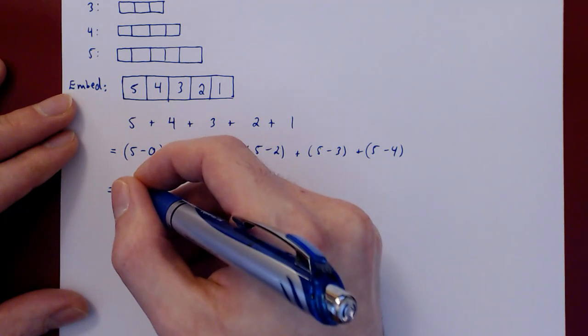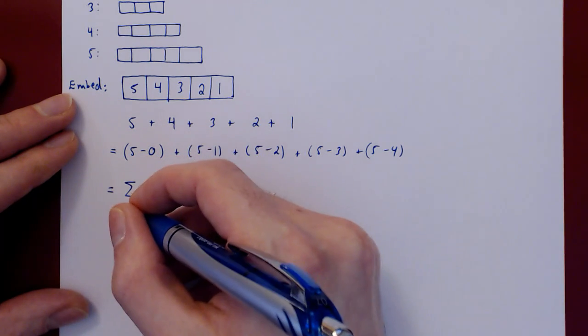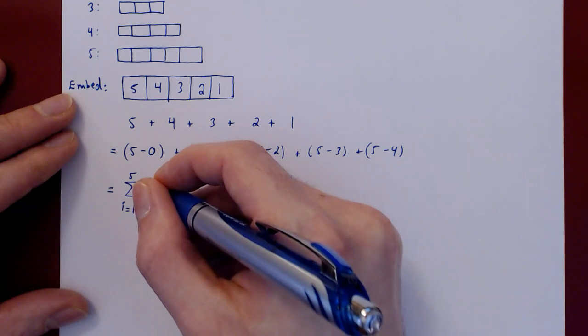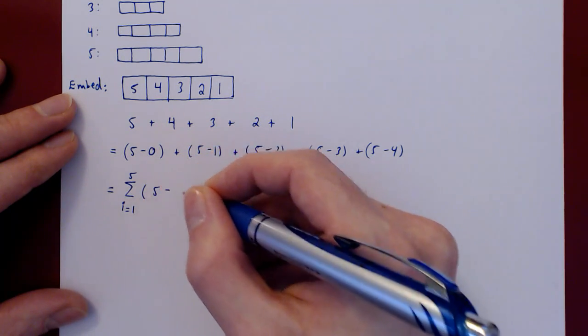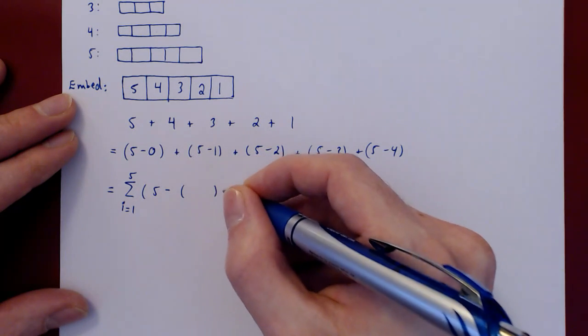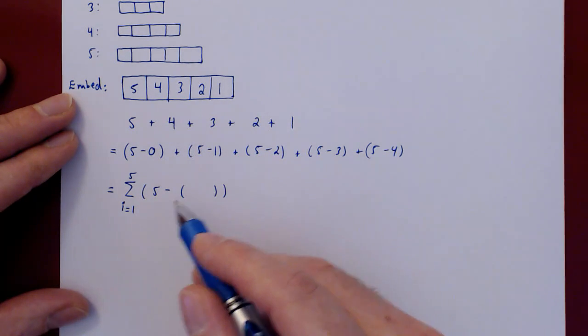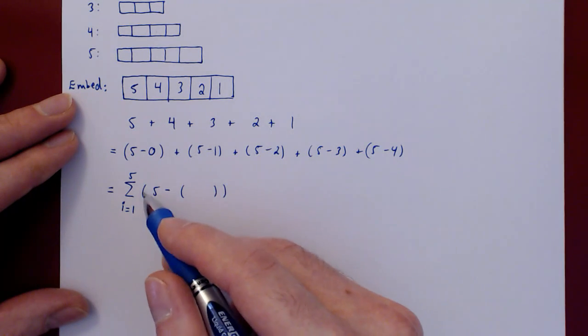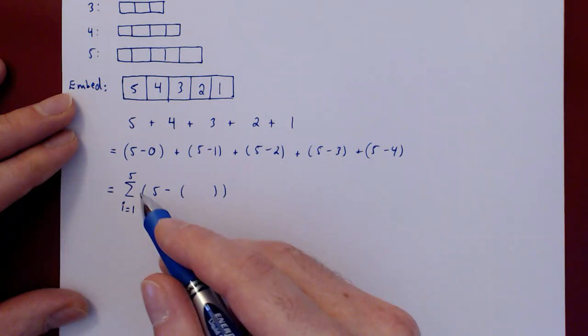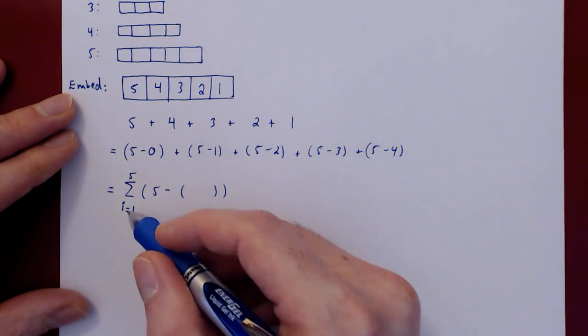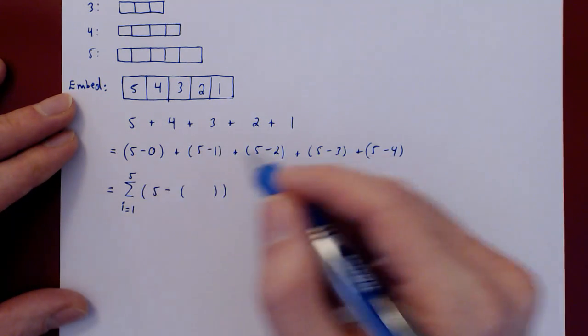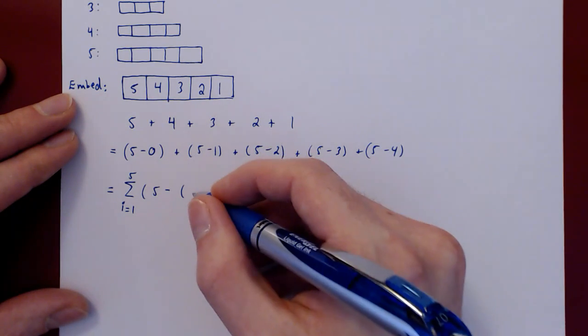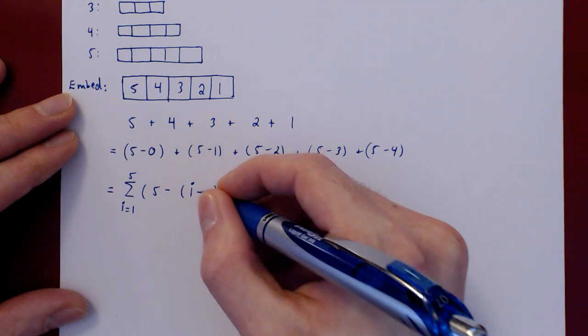So let's try and write this using sigma notation. We are summing our 5 terms, so i ranging from 1 to 5. 5 minus, and here we have to be careful. Is it 5 minus i? Not quite. When i is 1, we have 0. When i is 2, we have 1. When i is 3, we have 2. When i is 4, we have 3. When i is 5, we have 4. So what we are subtracting from 5 is obviously i minus 1.